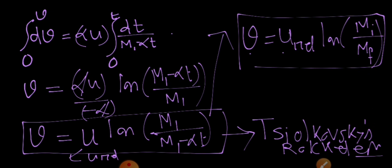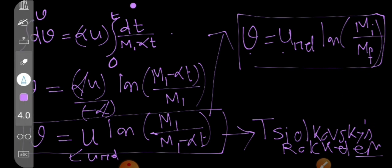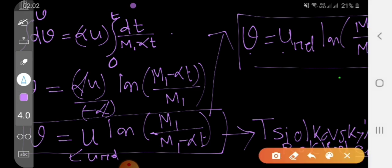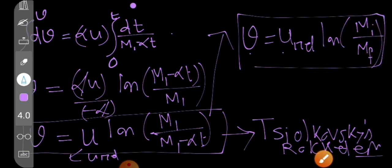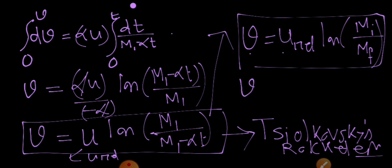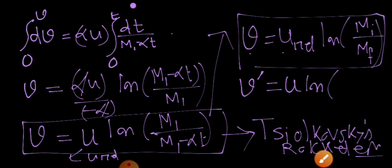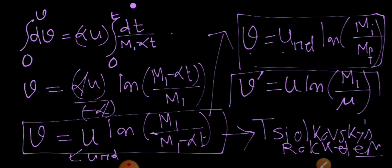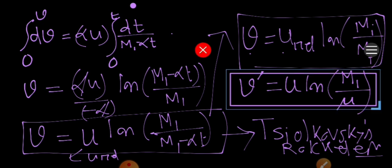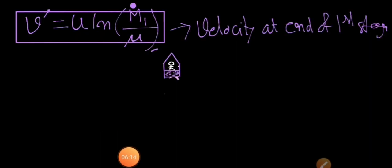Let's calculate the velocity at the end of the first stage. Once the first stage is complete, the initial mass was m1 and the mass at that point is mu. Using Tsiolkovsky's equation, the velocity attained, v', equals u · ln(m1 / mu). This is the velocity the rocket attains at the end of the first stage, which answers the first question.